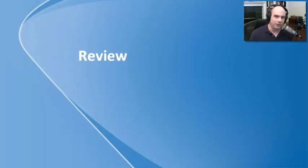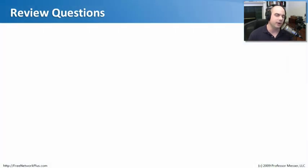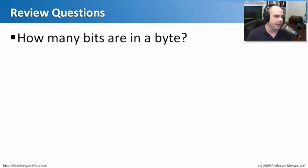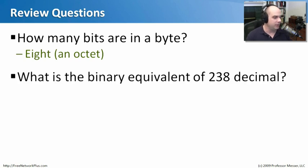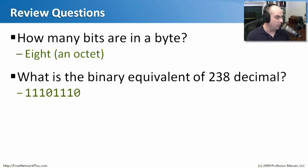We've already learned everything we need to know about binary math — I told you it wasn't that hard. Let's go through a few review questions. First, how many bits are in a byte? A bit is a 1 or a 0, and a byte is 8 of those put together — often referred to as an octet. Next question: what is the binary equivalent of 238 decimal? The answer is 11101110. If you take each of those ones — 128 plus 64 plus 32 plus nothing for 16, plus 8 plus 4 plus 2 — that all equals 238.